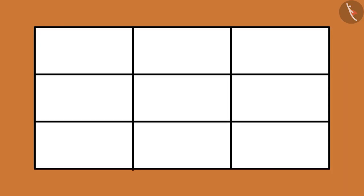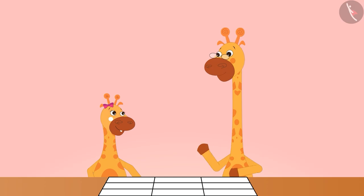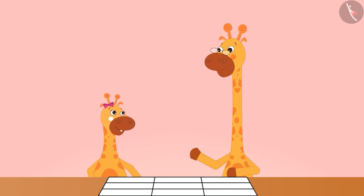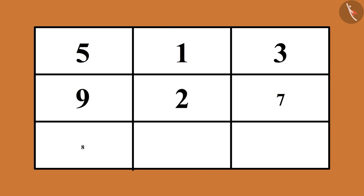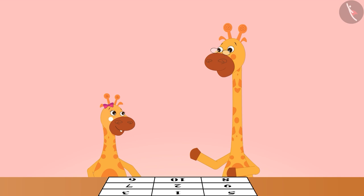First of all, you have to make some boxes on paper like this. Now write any number between 1 and 10 of your choice in these 9 boxes. Something like this, Papa. Exactly.